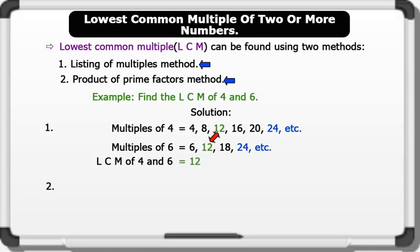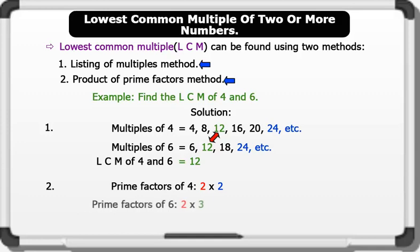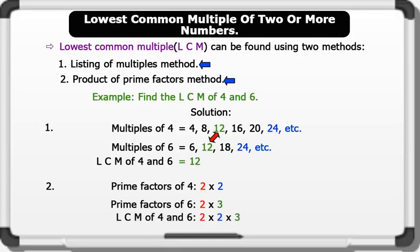Product of prime factors method: the prime factors of 4 are 2 × 2; the prime factors of 6 are 2 × 3. Note that common factors are listed once. Therefore the LCM of 4 and 6 is 2 × 2 × 3, which equals 12. That's brilliant!